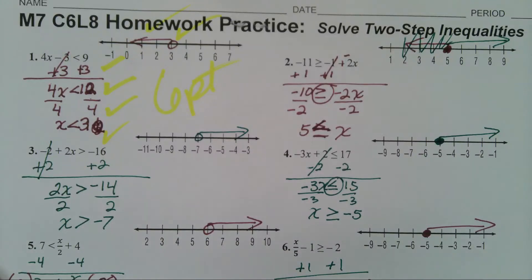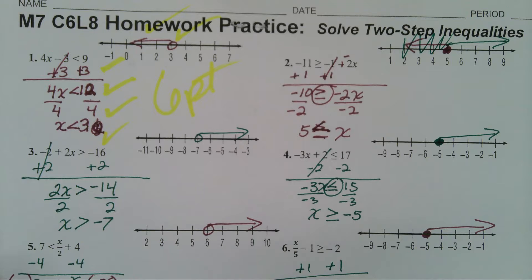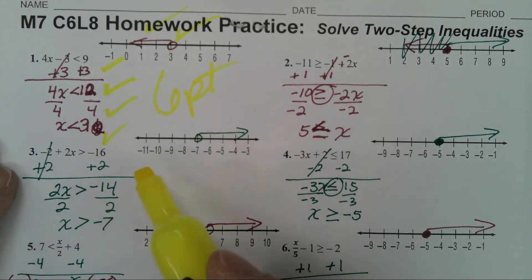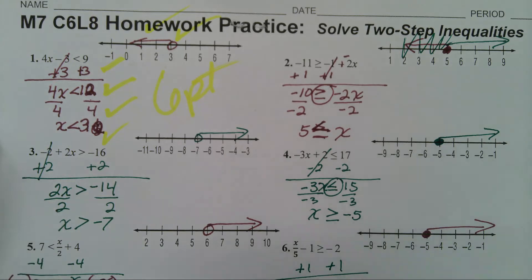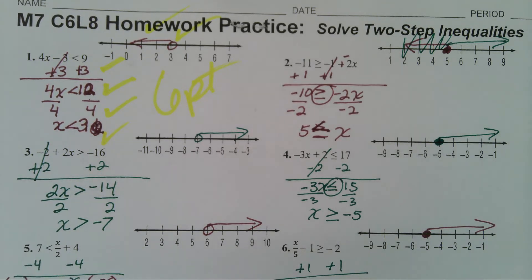Alright, so here are the answers to the homework from last night, and we are on problem number three now. You add 2, your result is 2x is greater than negative 14. Divide both sides by 2, x is greater than negative 7.